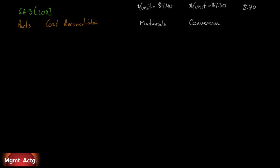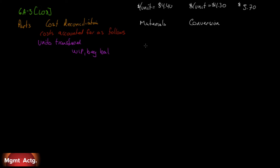Our cost per unit of conversion is $1.30, so our whole cost is $5.70. When we start a cost reconciliation, the first thing we do is costs accounted for as follows — because part 2 is costs to be accounted for, and this is costs accounted for. Let's deal with the units transferred first. Our work in process beginning balance was transferred, and we put that under our total column.